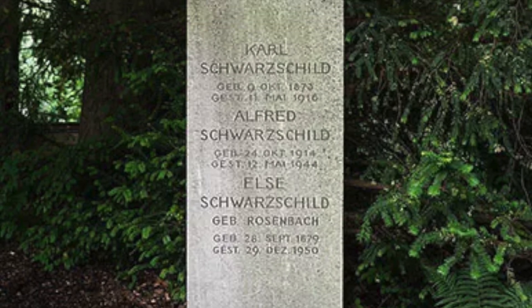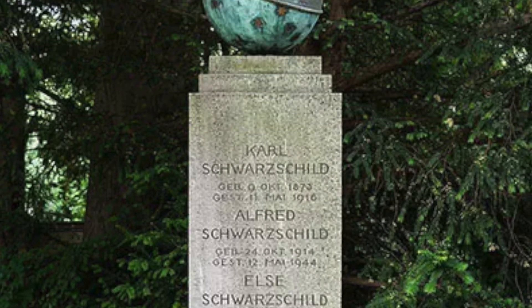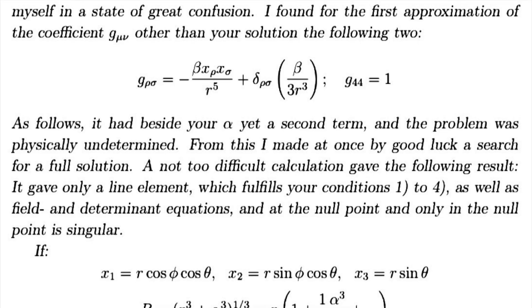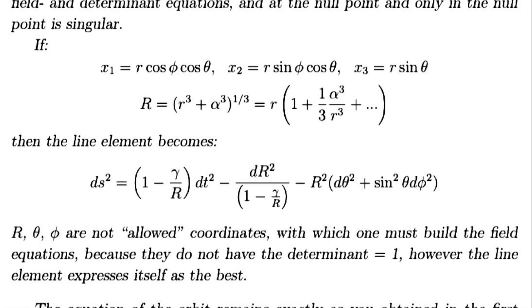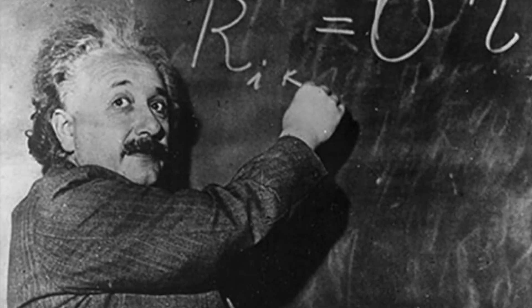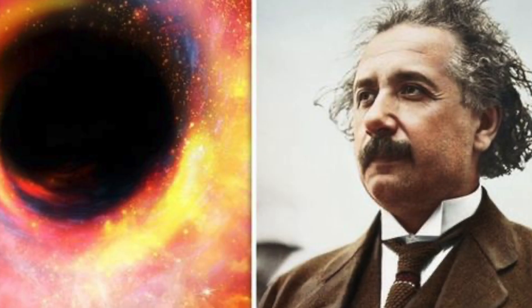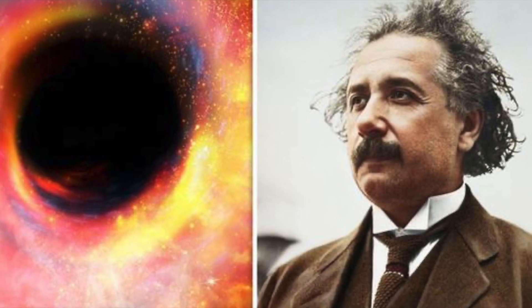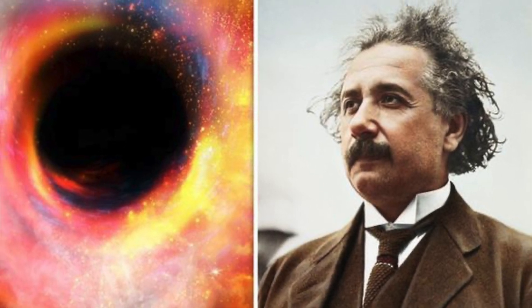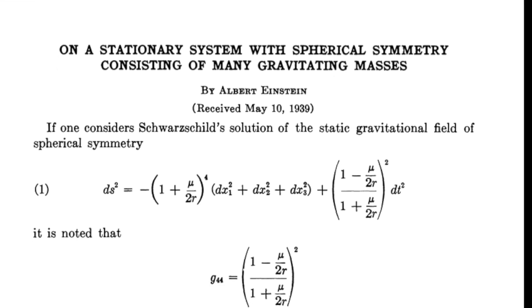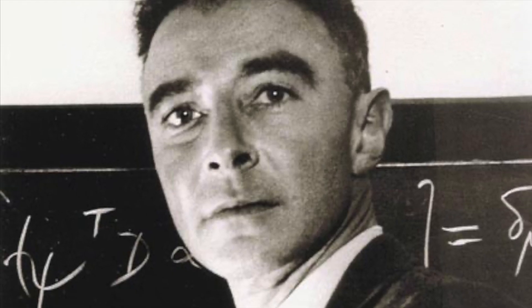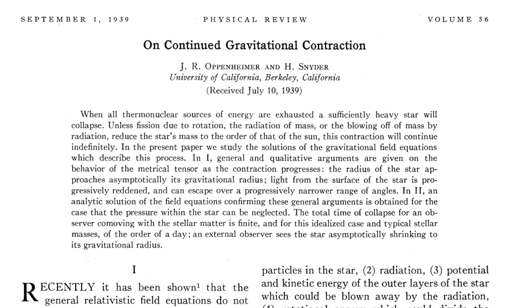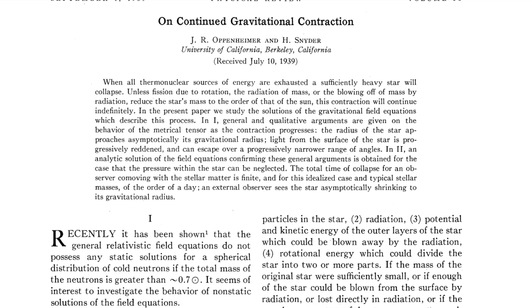Schwarzschild passed away on May 11th, 1916, at just 42 years of age. His work was groundbreaking, but at the time, few scientists fully grasped its significance. Even Einstein attempted to dismiss the so-called Schwarzschild demon. He believed that nature must have a way to prevent singularities from forming. But in 1939, the same year Einstein published his argument against black holes, physicists Robert Oppenheimer and Hartland Snyder presented a groundbreaking calculation that proved otherwise.